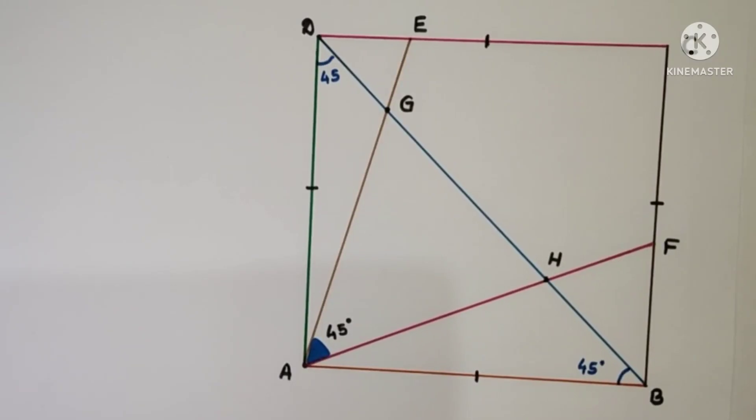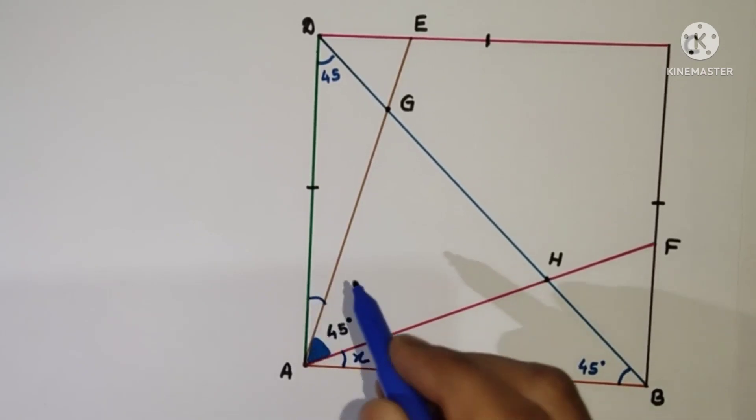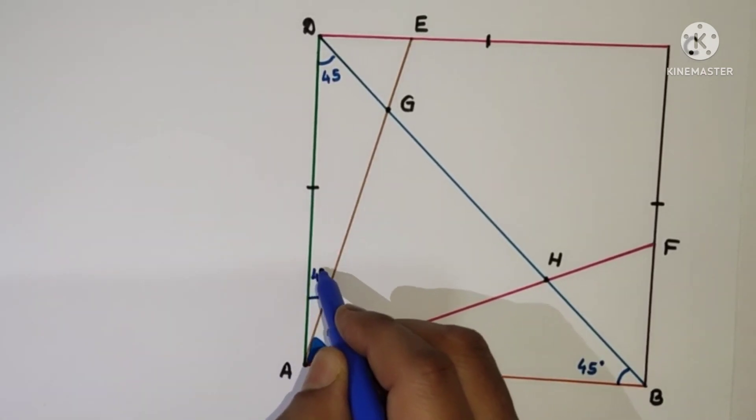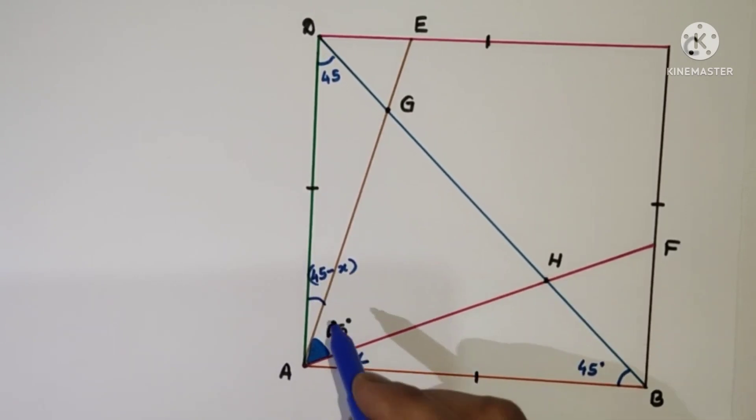So we do some constructions. Let us suppose this is X. So if it is X and this is 45, the whole thing is 90, so this is 45. So sum of these two will be 45. So this is X, so this will be 45 minus X.